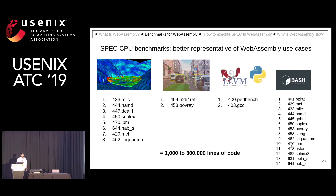On the other hand, the SPEC CPU benchmark suite is actually a better representative. For example, eight of these applications are scientific applications, all of them are real applications, and they are large — around 1,000 to 300,000 lines of code.